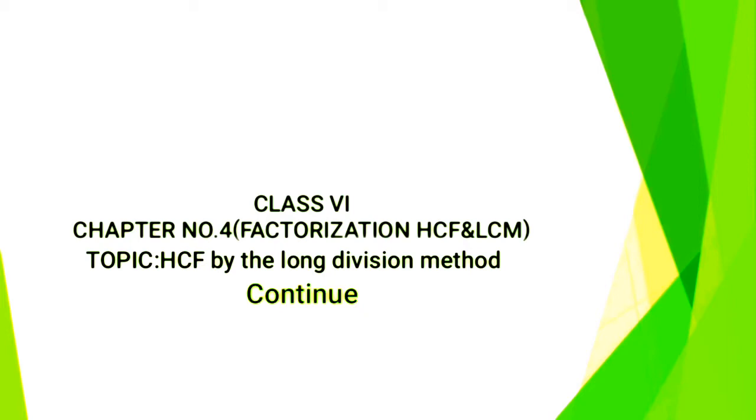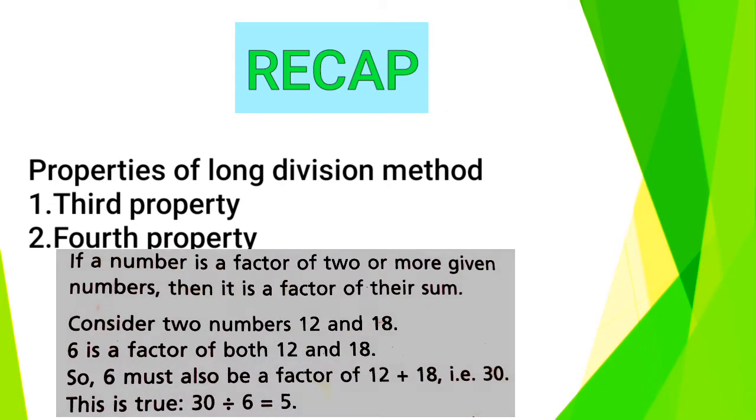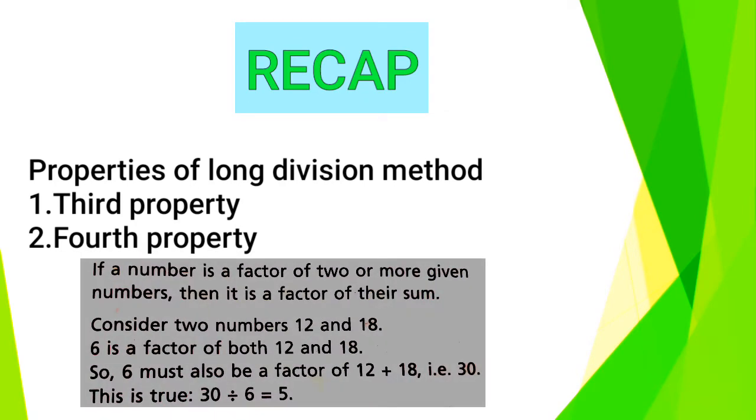Properties of long division method. Number 1, Third property. Third property is that if a number is a factor of two or more given numbers, then it is a factor of their sum.